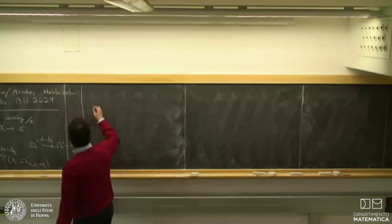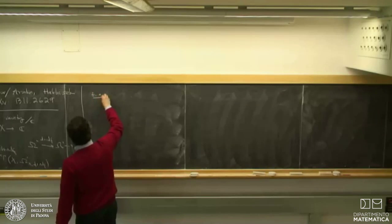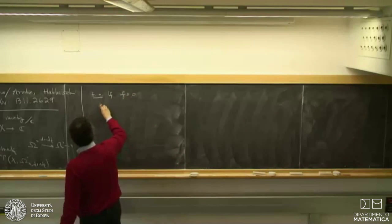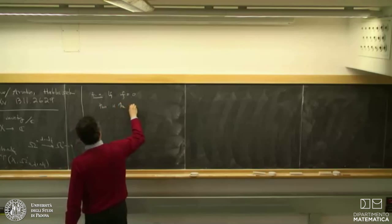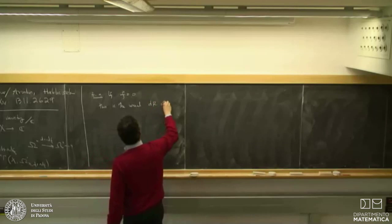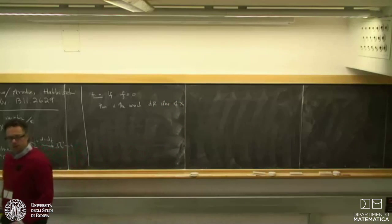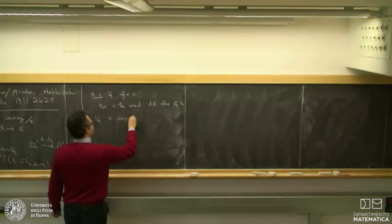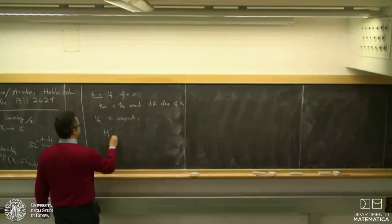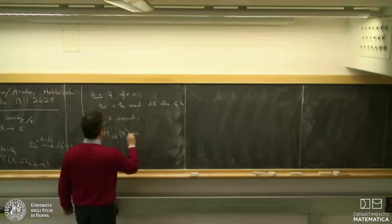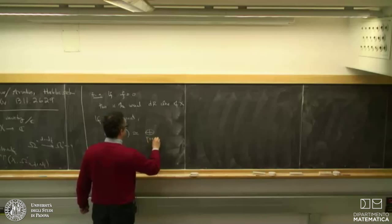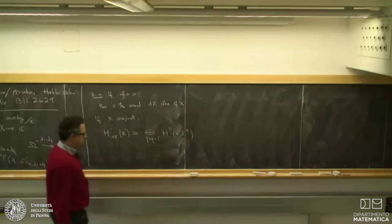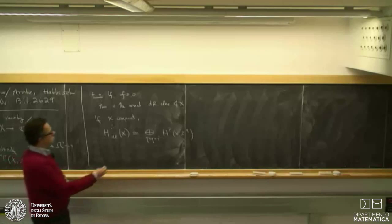A particularly simple example is when f is 0, so it plays no role; then this computes just the usual de Rham homology of X. If X were compact, we'd have a very useful way of computing it. The Hodge theorem says that for compact X, the de Rham cohomology of X equals the direct sum over p+q=i of H^p(X, Ω^q). This is the Hodge theorem, of course.